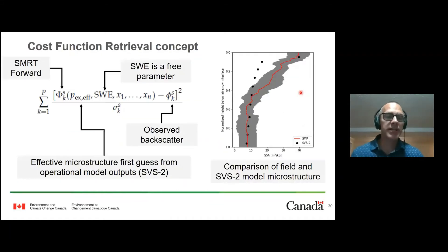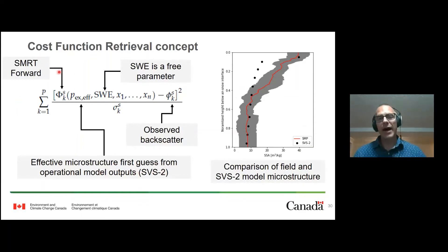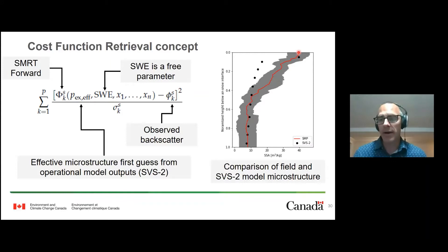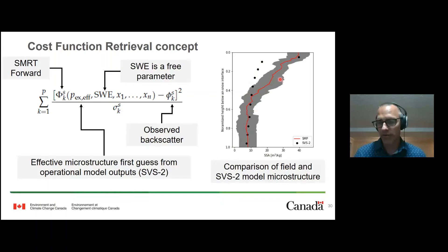The SWE retrieval approach uses observed backscatter, a microstructure first guess from the snow model, and a forward modeling component to minimize a cost function and estimate SWE. A key part of this is the microstructure output from the snow model. We're putting a lot of effort into using field measurements — including snow micropenetrometer profiles of specific surface area of snow grains — to evaluate the simulations. At Trail Valley Creek, the model simulations match the observations quite well overall. This integration of modeling and remote sensing is really going to be important.